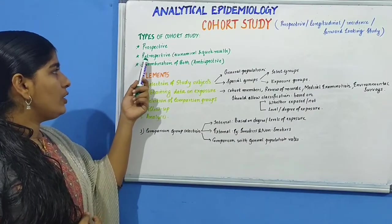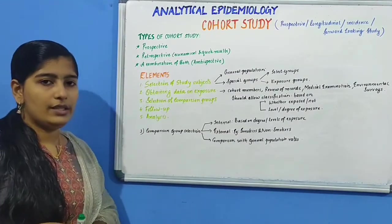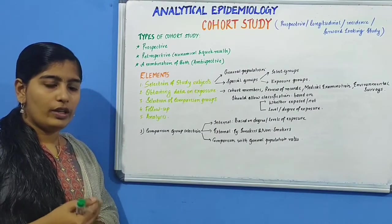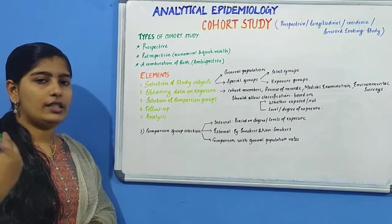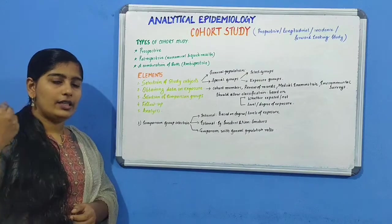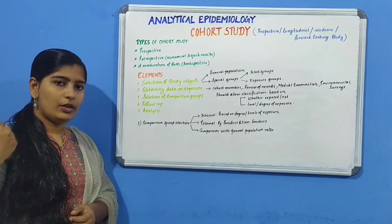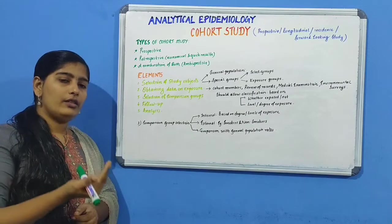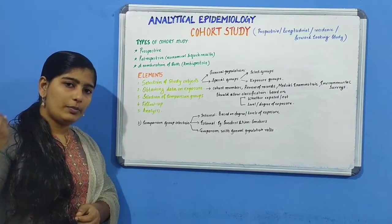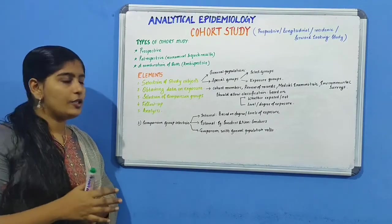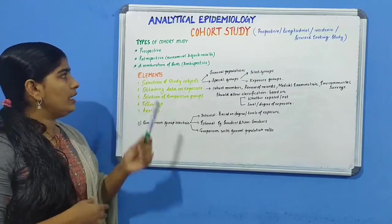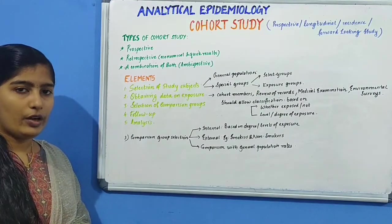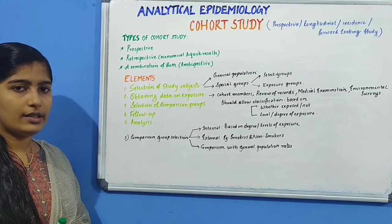In retrospective study, the disease has already occurred. We then move 10 to 30 years back, for example, and start our study. We obtain information through past records, track codes, etc., and then proceed from the past to the present. Retrospective study is way more economical and it provides quicker results.